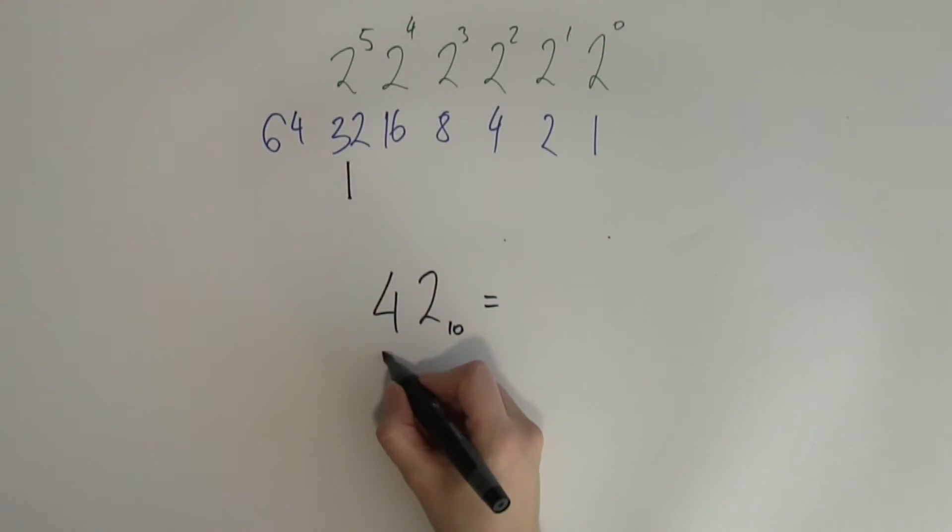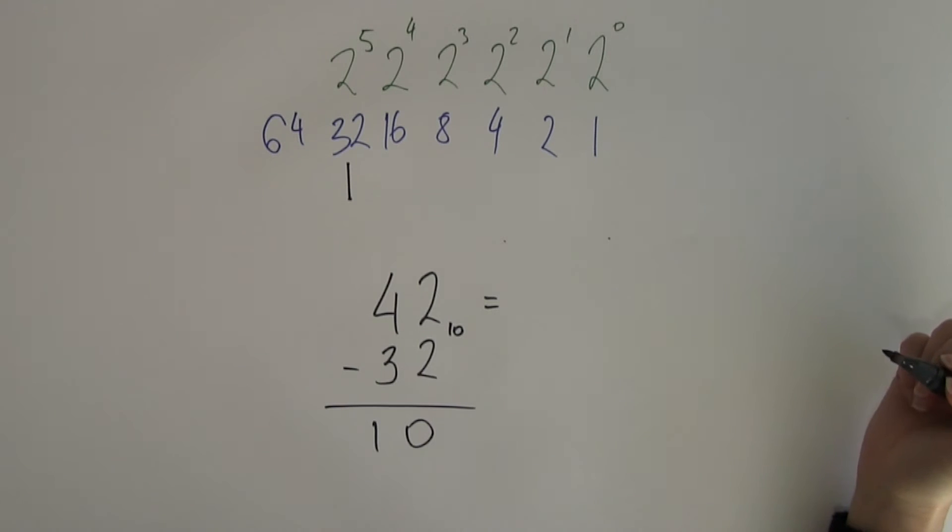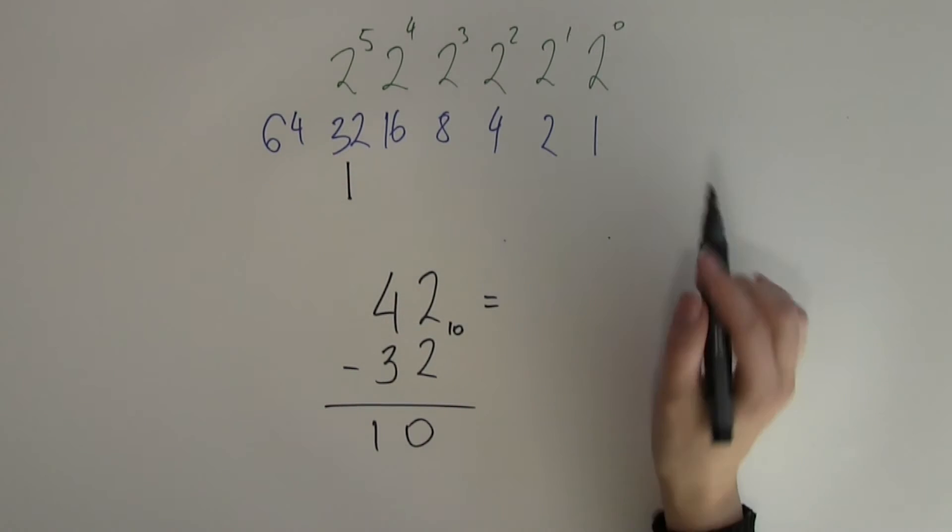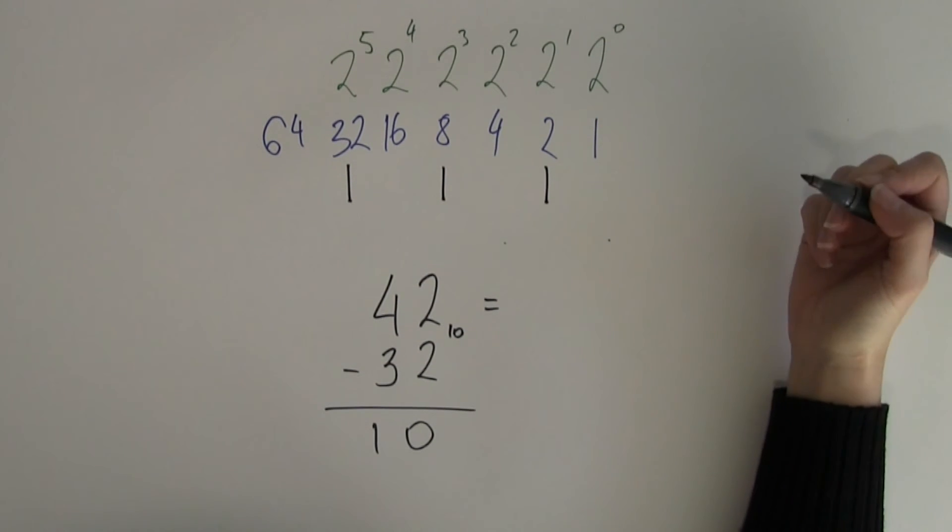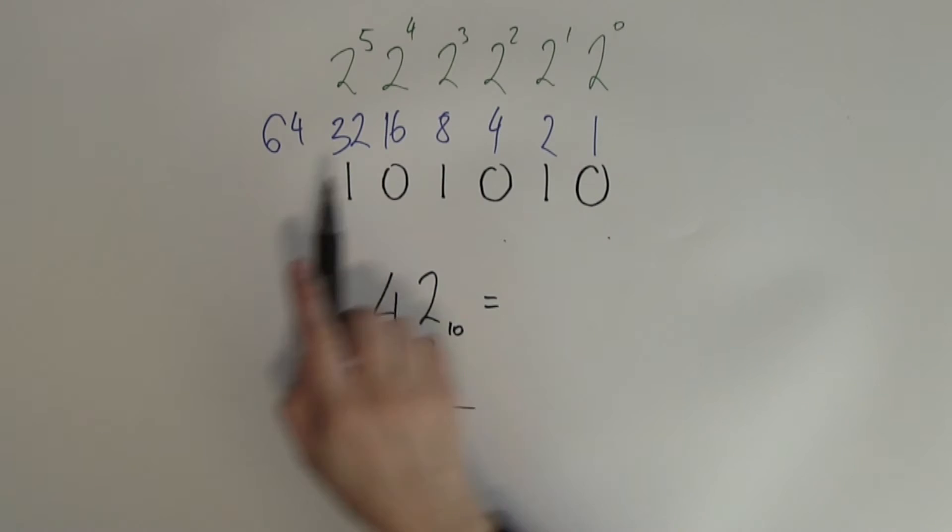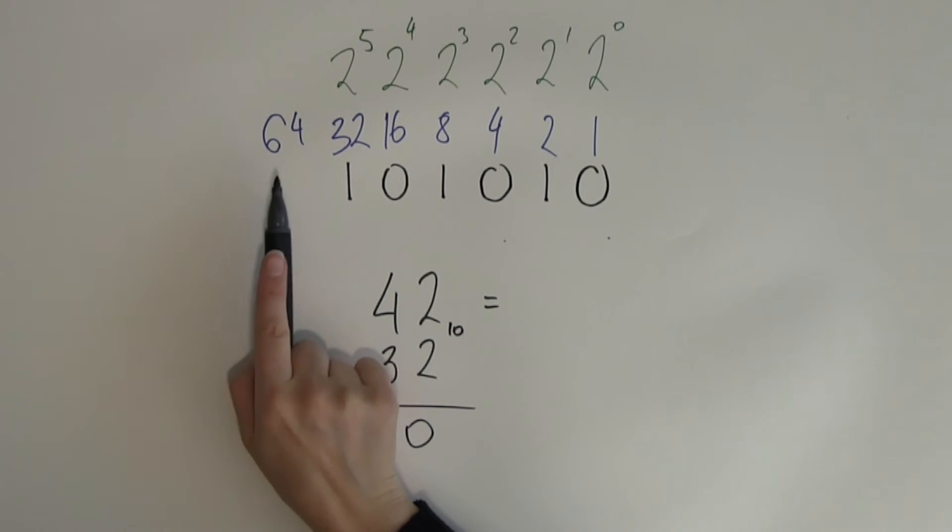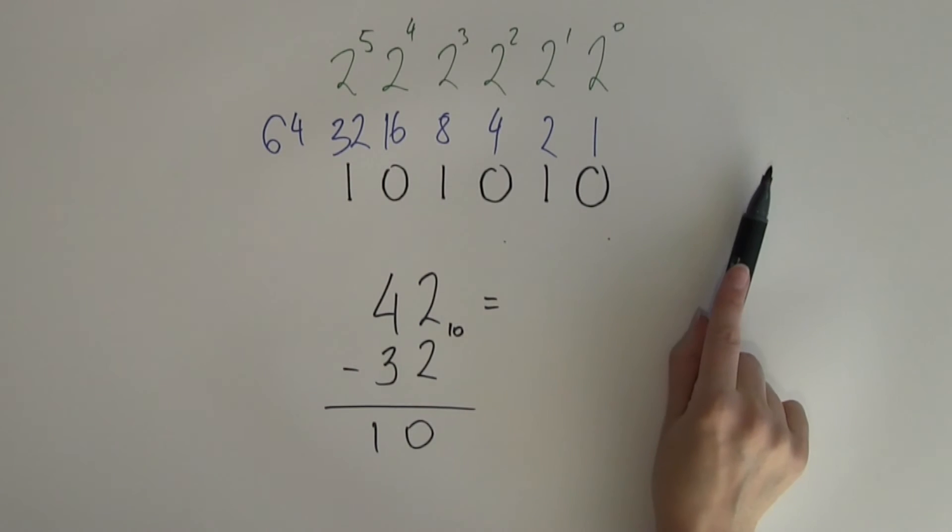What's the remainder? 42 minus 32 gives me 10. When I'm looking at these place values, 10 can easily be built up from 8 and 2. Don't forget about the placeholder zeros. I need to place a zero here under 16, here under 4 and here under 1. Whether to put a place value under 64 or not, it's usually your choice, but in practical examples you don't really see binary numbers starting with zeros unless this is something like the fixed length place value tables like the 8-bit binaries. But at the moment, we're just looking at general binary numbers.